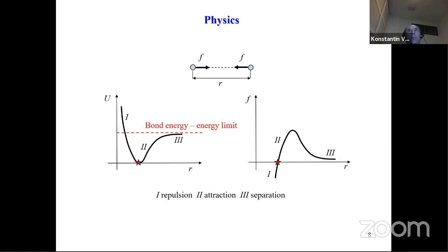Let's start with the energy limiters — the physical part. When we consider two elementary particles, there is an interaction between them depending on the distance, and the forces also depend on the distance. On the left-hand side you can see the energy dependence on distance, with three areas: repulsion, attraction, and separation. During separation, the energy approaches an energy limit called in chemistry the bond energy. If we differentiate the energy with respect to distance, we get the force-distance diagram with a limit point due to this energy limit.